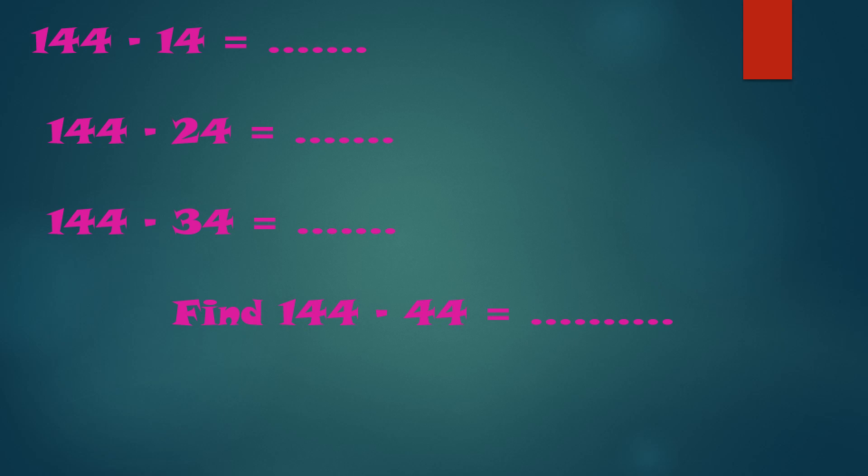Okay, 144 minus 14, 144 minus 24, 144 minus 34. Find 144 minus 44. Let's start from the first one: 144 minus 14. Subtract the ones: 4 minus 4 equals 0, 4 minus 1 equals 3, and 1 minus 0 is 1, so it will be 130. 144 minus 24: 4 minus 4 is 0, 4 minus 2 is 2, 1 minus 0 is 1, so the answer is 120.